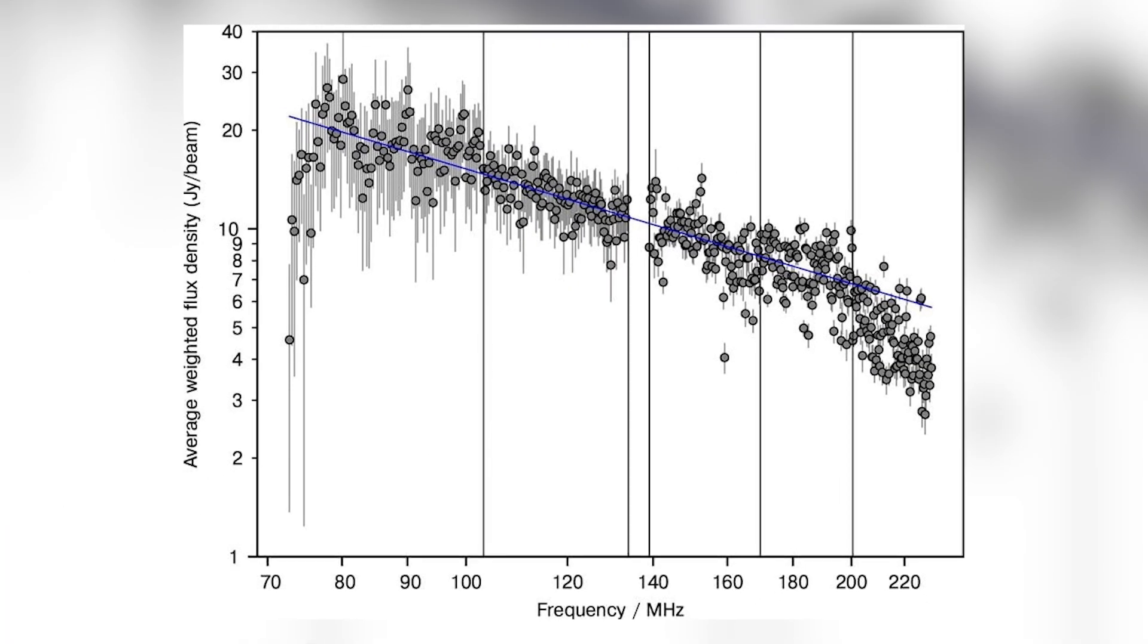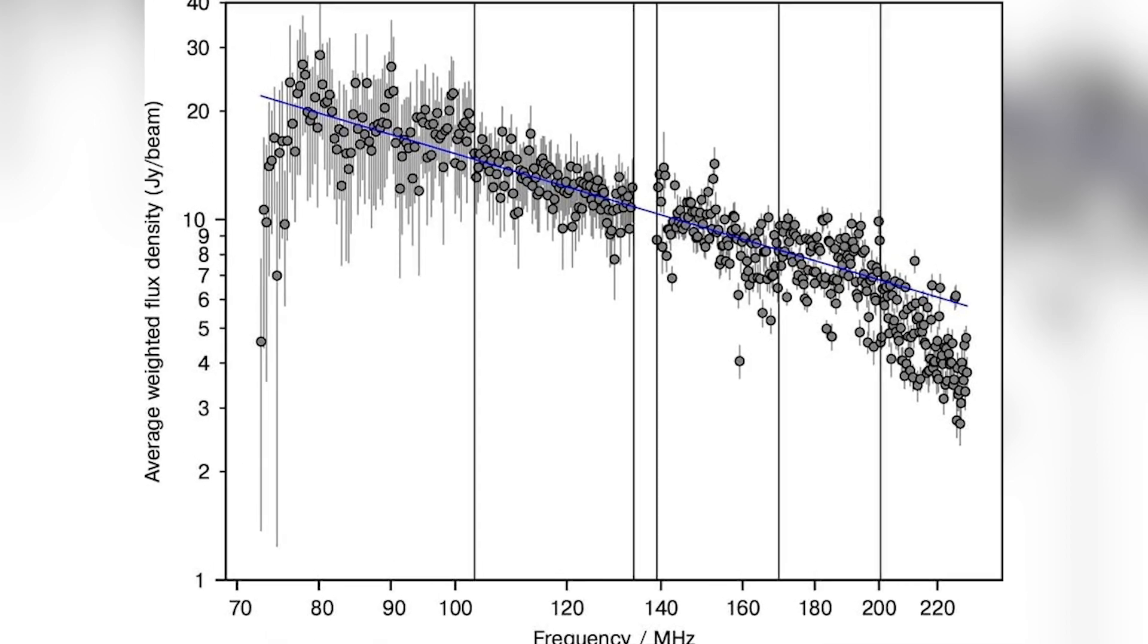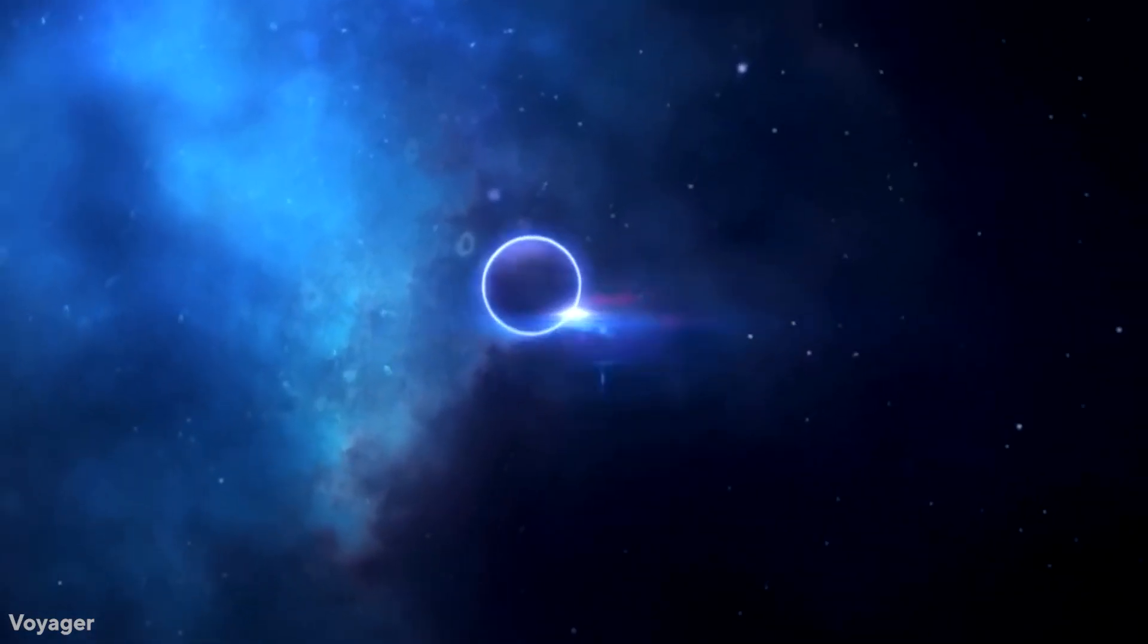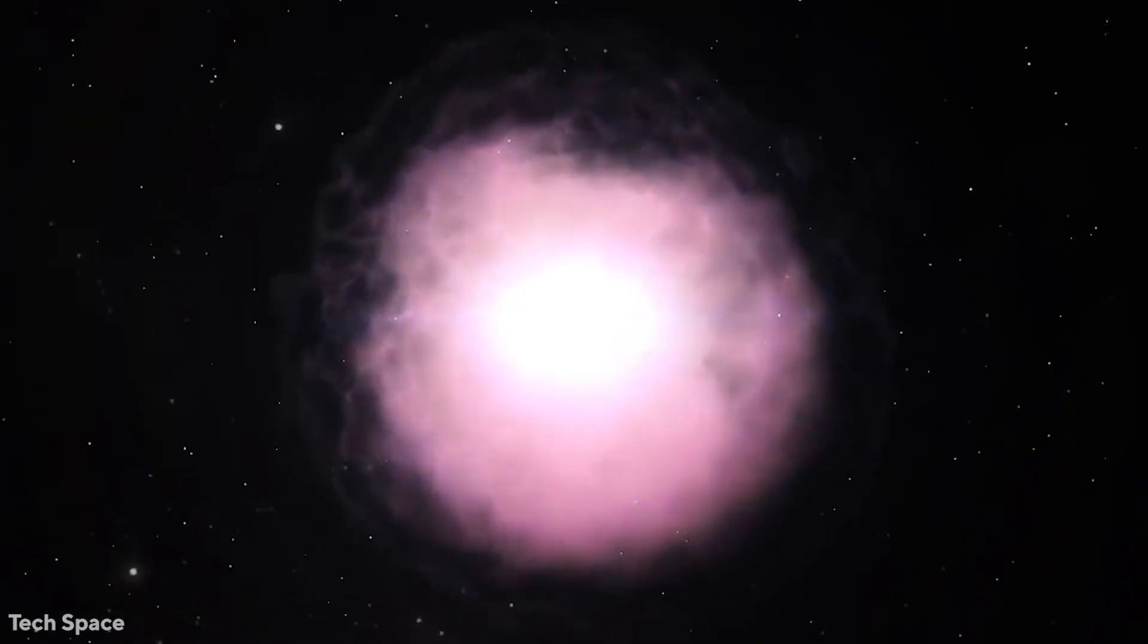Many researchers have taken the new object GLEAM-X J162759.5-523504.3 into investigation, and they all have comments about this extremely bright object. A study by a group of Turkish astronomers led by Ali Ardata Jankali of Sabancı University, Istanbul has further explained the properties of the object.